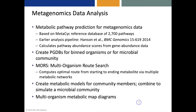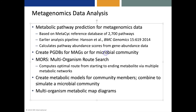There are a number of metagenomics data analysis capabilities, including performing pathway prediction for metagenomics data and calculating pathway abundance scores. The user can also create pathway genome databases for metagenome-assembled genomes or for the entire microbial community. There's also a multi-organism version of the metabolic route search tool that computes an optimal route from a starting to an ending metabolite via multiple organism metabolic networks. The software can create metabolic models for individual members of a microbial community and combine those models to simulate the full microbial community, and we can create multi-organism metabolic map diagrams.